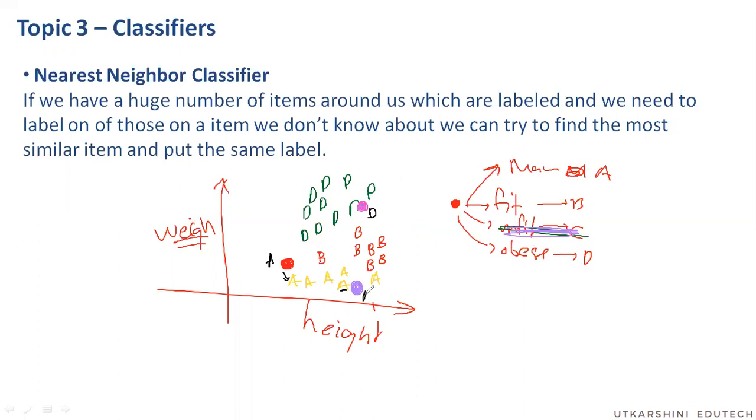Similarly, this person has this particular one as the closest, so this is also malnutrition. So that is the logic that is used by the nearest neighbor classifier to tell whether a particular person, a particular item, is belonging to which category.